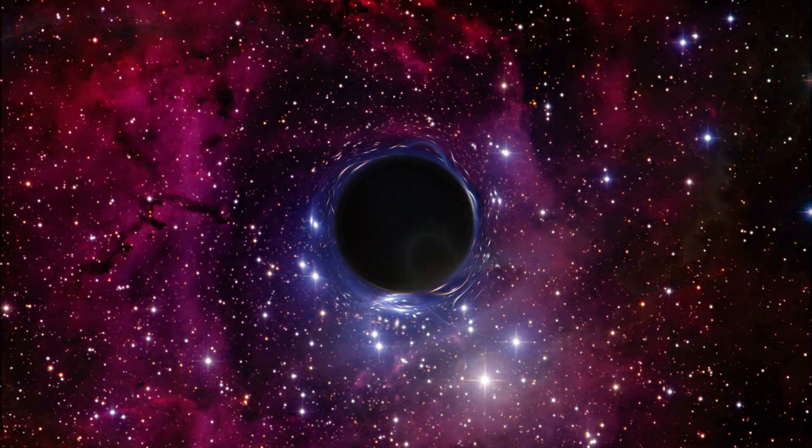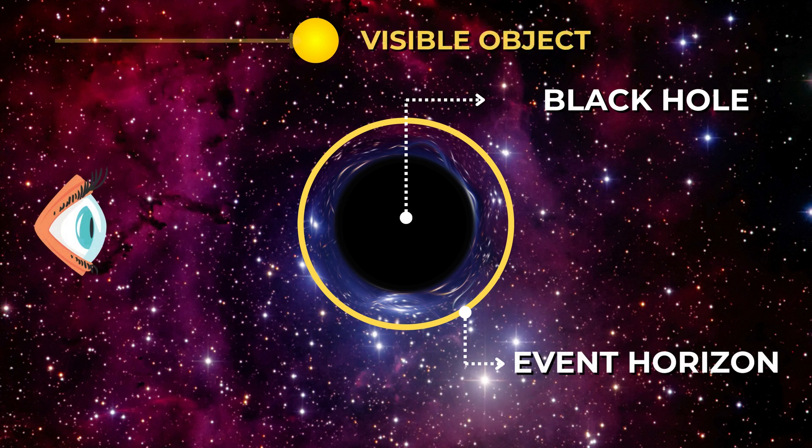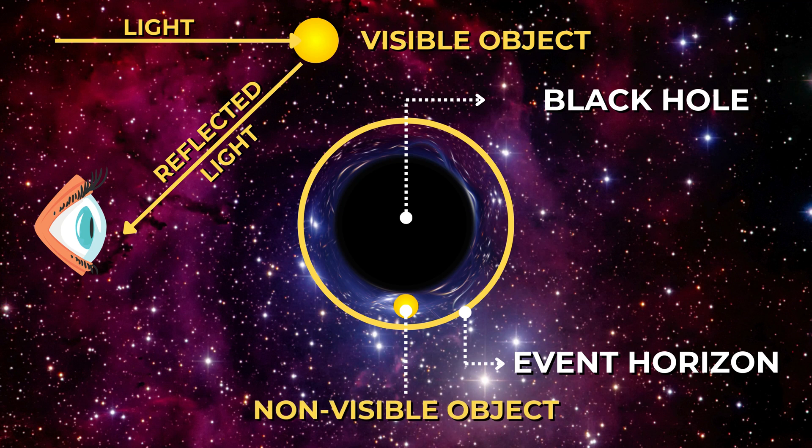The boundary around a black hole beyond which nothing can escape is called the event horizon. It's like a point of no return. Once you cross the event horizon, you're doomed to be pulled into the singularity.